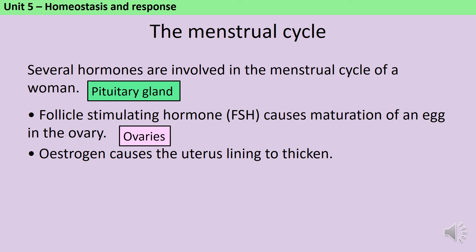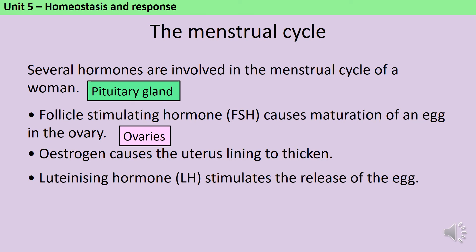After the surge of oestrogen, we see a surge of the next hormone, called LH, or luteinising hormone, and what luteinising hormone does is it triggers ovulation. This means that the mature egg is released from the follicle and able to travel down the fallopian tube in the hope of being fertilised. Luteinising hormone is also produced in the pituitary gland.